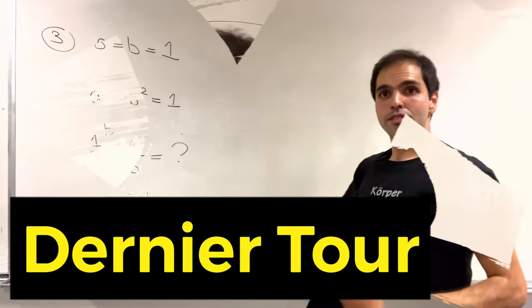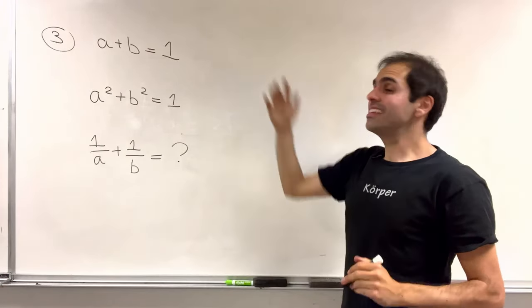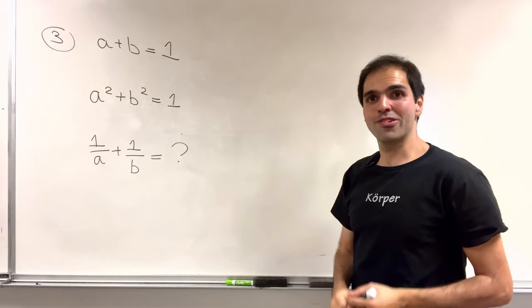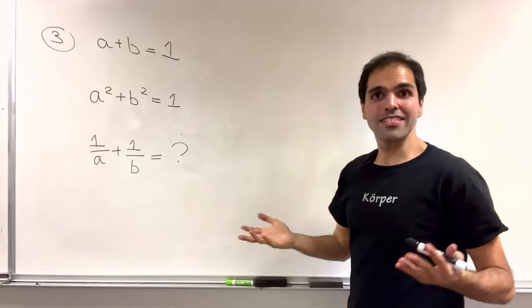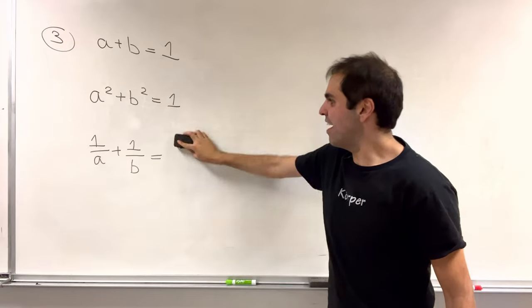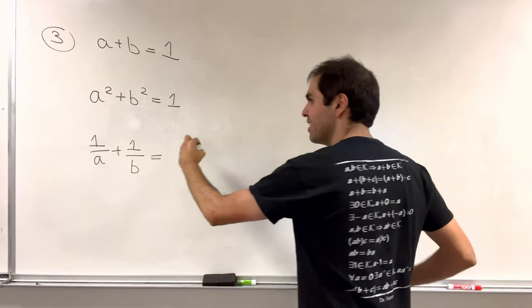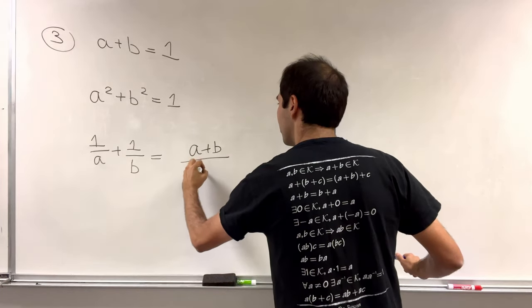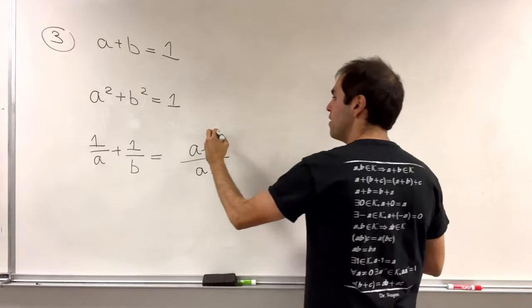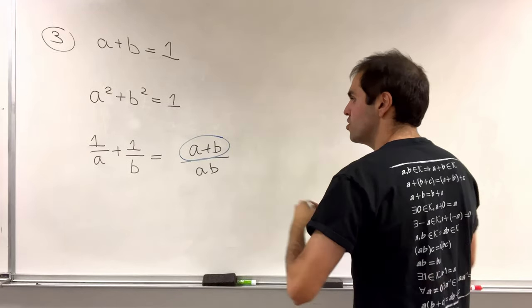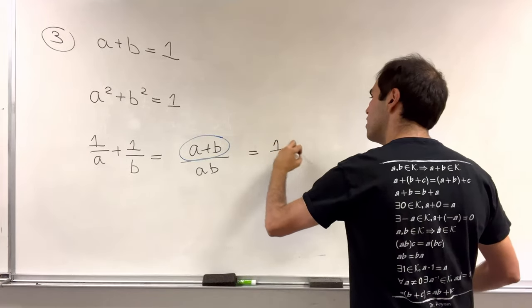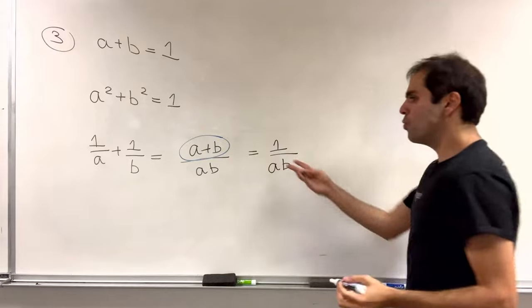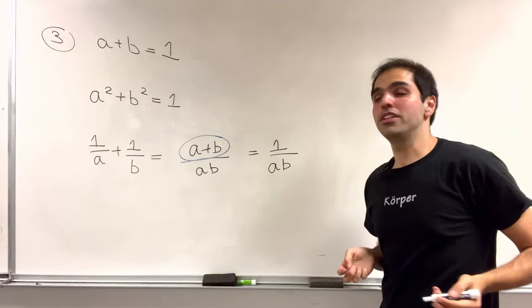Well, let's see. So here, last round, the sum is 1. The sum of squares is 1. What about the sum of reciprocals? Well, just as before, we can put it on a common denominator. So a plus b over ab. And then a plus b is 1. So this is just 1 over ab. So all we need to calculate is pretty much ab.